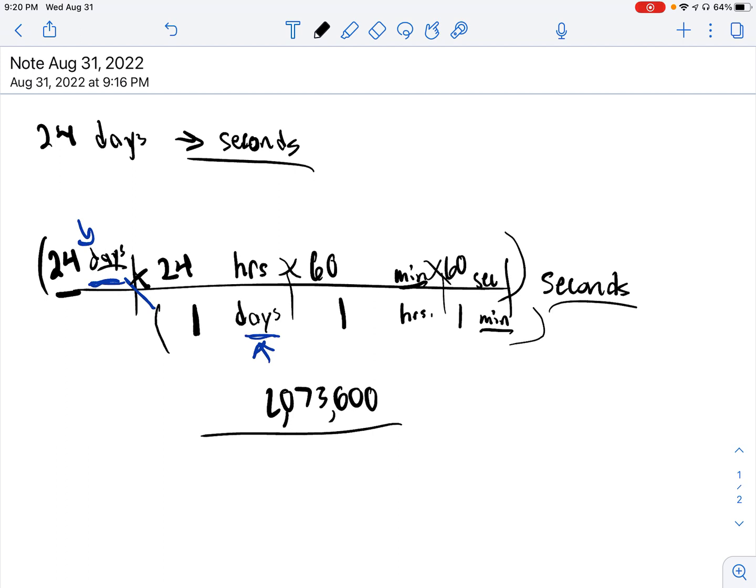Now that's the top half. Now we have to do the bottom math, which is pretty simple. We got 1 times 1 times 1. So that ends up being 1. So you're going to take 2,073,600 divided by 1, which ends up being itself. And you get 2,073,600 seconds.